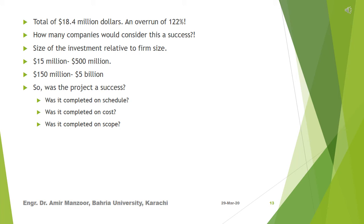Therefore, it is possible to argue that Cisco's implementation actually ran over budget by a total of $18.4 million — an overrun of 122%. How many companies would consider this a success? Also consider the size of the investment relative to firm size at the time the decision was made. The investment made was $15 million and Cisco's revenue at that time was $500 million. Cisco wanted to grow and become a $5 billion plus company. If you scale this ERP project up to a company that would like to become a $5 billion plus company, it equates to a $150 million project.